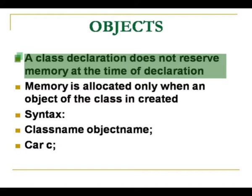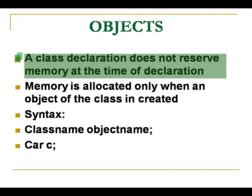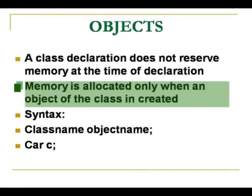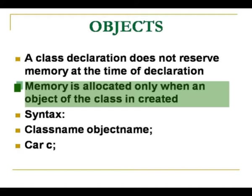Next, we come to the concept of objects. We have seen about classes — the class name, the class keyword, the member functions, data members, and the access specifiers. Now we come to the concept of objects. An object is required for allocation of memory. A class declaration does not reserve any memory when its body is declared. Though you declare the data variables and member functions, still it does not allocate memory. Memory is allocated only when the object of a class is created.